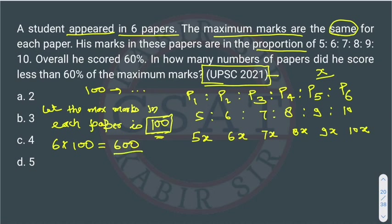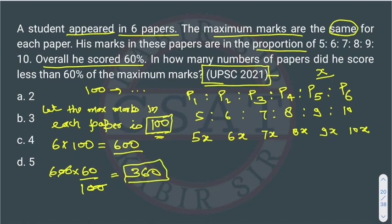In the proportion, overall he scored 60 percent. What is 60 percent of 600? It will be 360. The student scored 360. We know in each paper how much marks he scored. If we add the marks of all his papers, then it will be equal to 360 because we know that he got 60 percent marks.